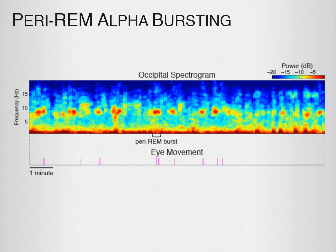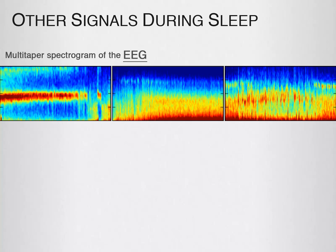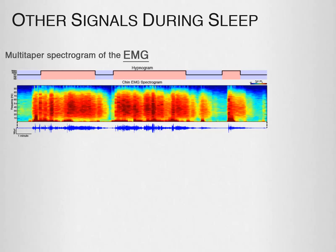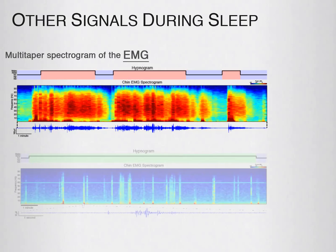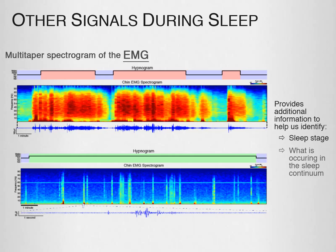Here's another example where we clearly see the distinct peri-REM alpha bursting pattern. Below the spectrogram, we are also showing data on eye movement during this time, highlighting the potential linkage between some of these peri-REM alpha bursts and phasic REM sleep during which eye movements occur. We can also use spectrograms of other signals to help with sleep analysis. For example, here's the chin EMG signal as a spectrogram. The chin is one of the first muscles to change tone as someone falls asleep. When awake, the EMG spectrogram shows very strong broadband activity. During REM, we only see little intermittent bursts of activity in the muscle. This data provides additional information to help identify what stage of sleep someone is in.